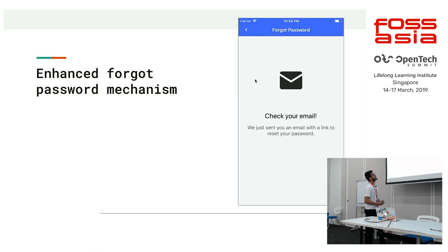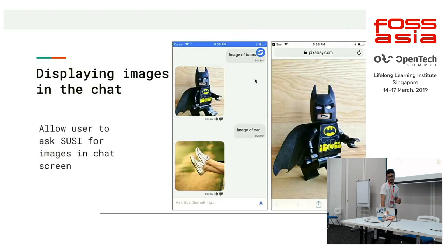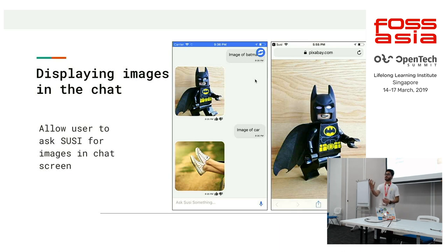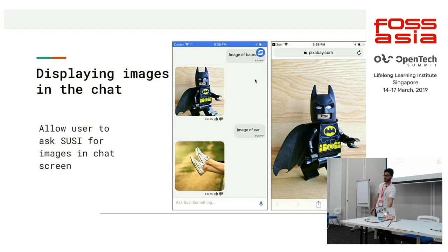I worked on enhancing the forgot password mechanism. Currently, the user enters their email and we send a confirmation link, and the user can reset their account password directly. I also added support for displaying images in the chat. You can ask SUSE for any image — like if you want an image of Batman, SUSE will return the image of Batman. It shows a preview of the image, and once you click on the preview you are directed to the full image.